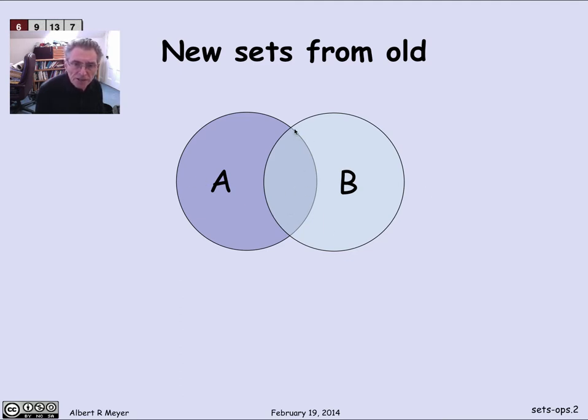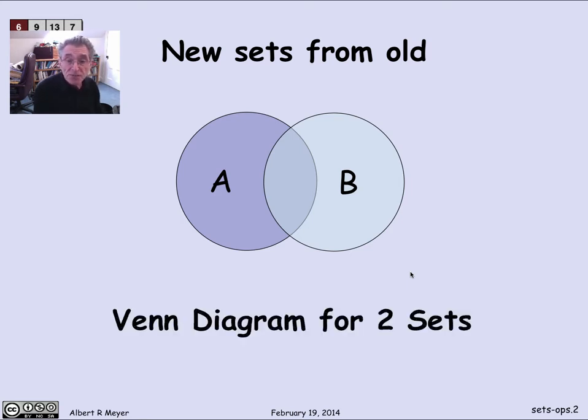The overlapping area, this lens-shaped region, are the points that are in both A and B. And the background are the points that are in neither A and B. So this sort of general picture allows you to classify points with respect to A and B. And it's called a Venn diagram. In this case, for two sets.